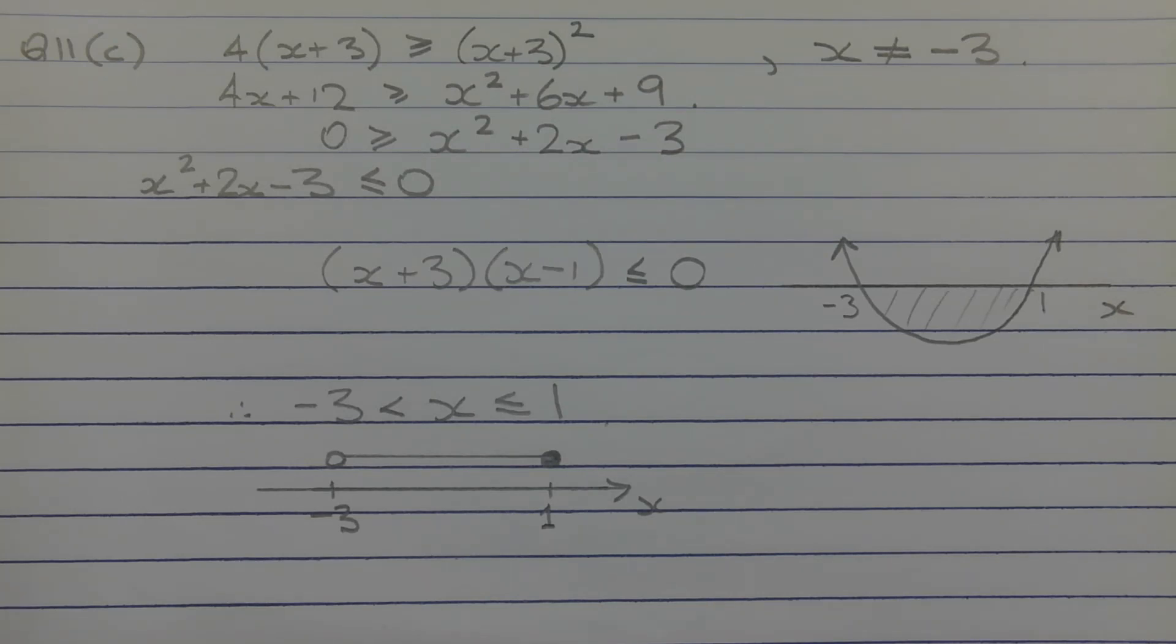graphing a parabola and noting which part we're interested in, we can solve the inequality that way. So let's move the terms on the left-hand side over to the right-hand side. We get 0 greater than or equal to x squared plus 2x minus 3, or x squared plus 2x minus 3 less